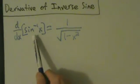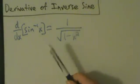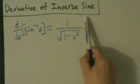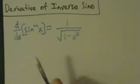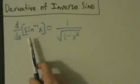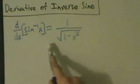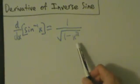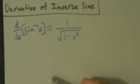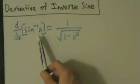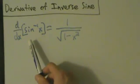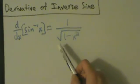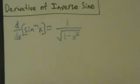Here d/dx of inverse sine of x equals 1 divided by the square root of 1 minus x squared. I think that's actually pretty interesting that if you take a derivative of this inverse trig function, you get something that has no trig in it anywhere at all — you just have this x squared and there's a square root. So again, the derivative of inverse sine, sometimes also called arc sine, is 1 over the square root of 1 minus x squared.